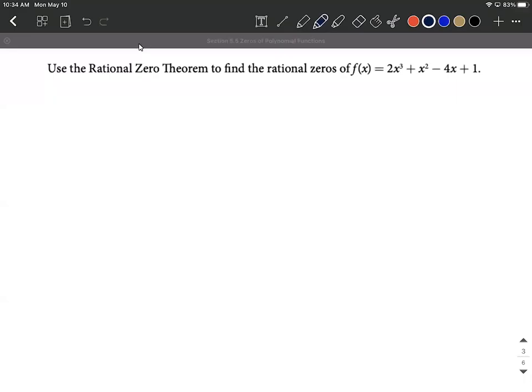Let's use the rational zeros theorem to find the rational zeros of this polynomial. So we have f(x) = 2x³ + x² - 4x + 1. The first thing I'm going to do is list out the possible rational zeros.